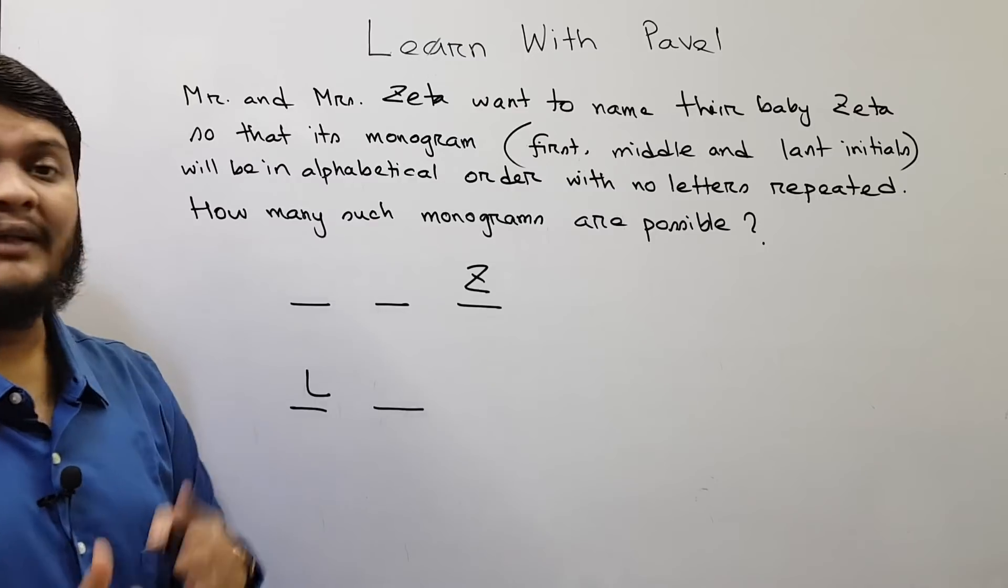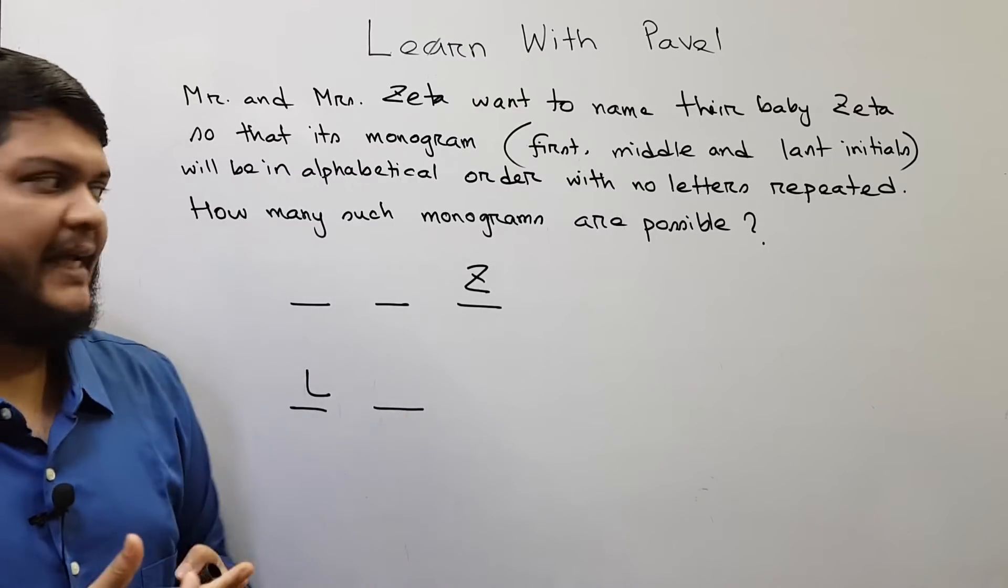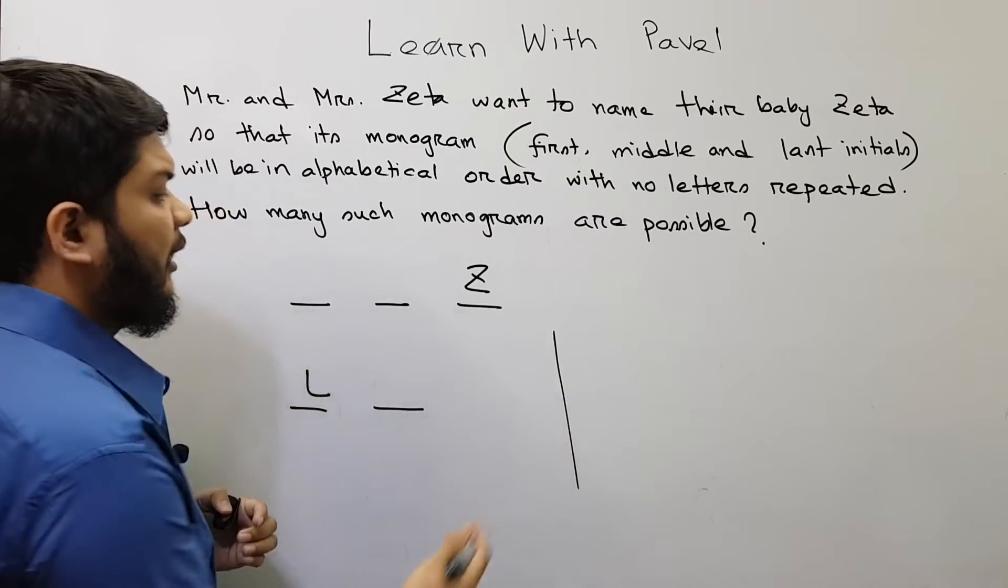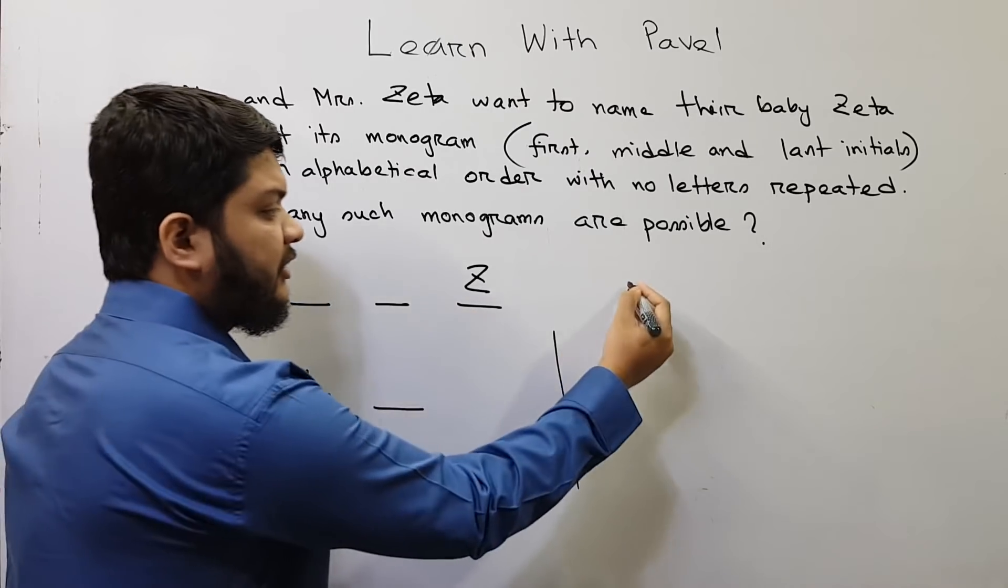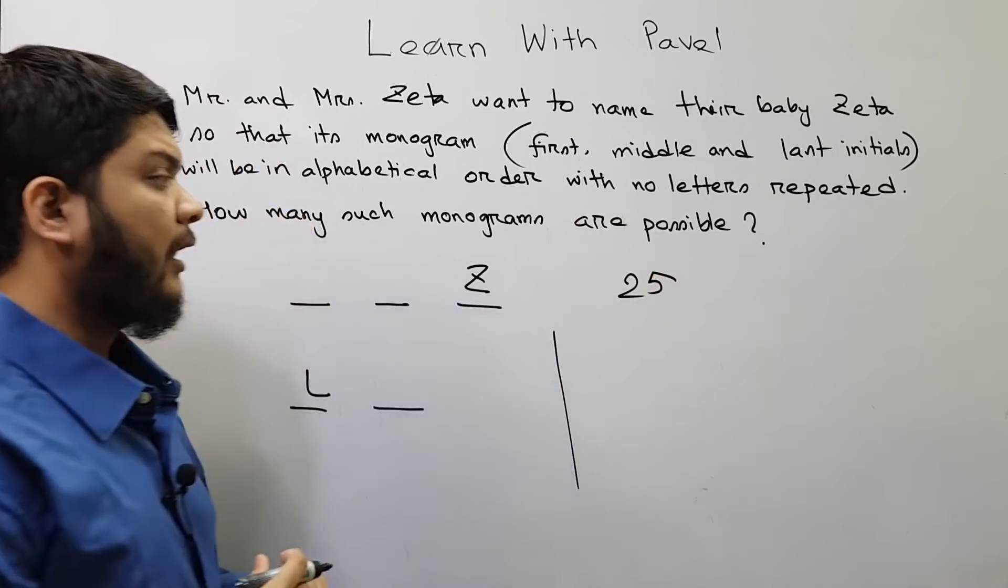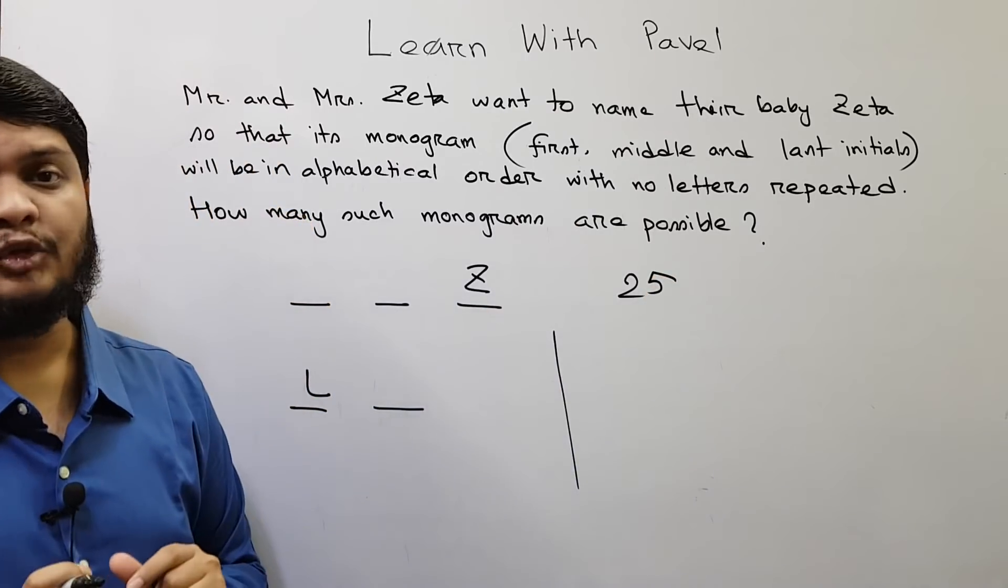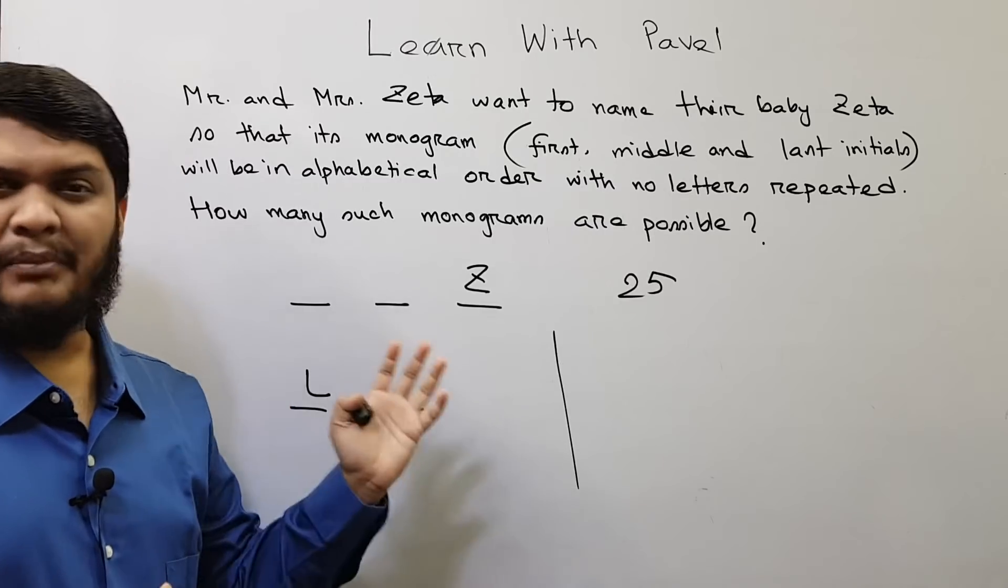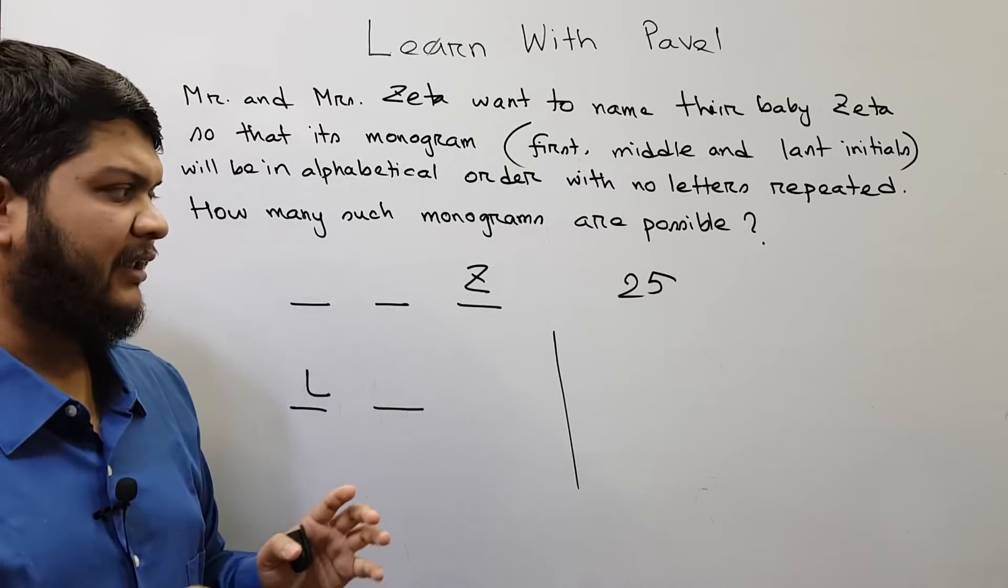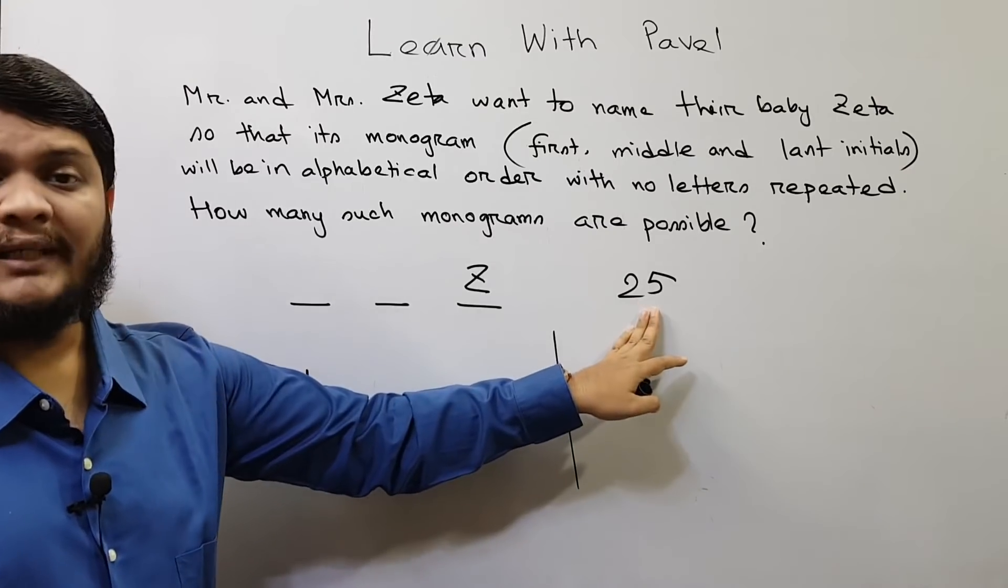Let me show you another approach which will be much easier. Now other than Z there are 25 letters. Among these 25 letters we have to pick two of them. We can pick A, B, A, C or whatever it is. We need to select two of them.